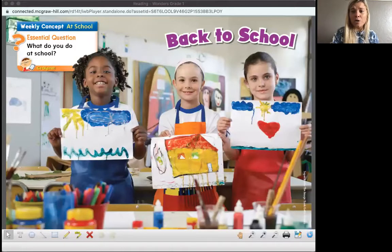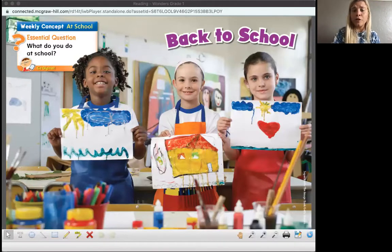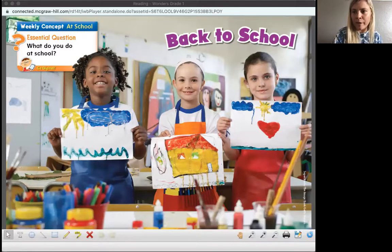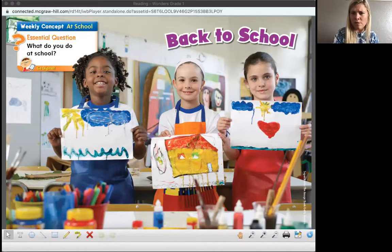First grade, our essential question that we are going to see all throughout this unit is: what do you do at your school? We have this picture here showing us three friends, and these friends are doing something. What are they doing at their school? Yeah, they are in our class and they're painting and they're drawing. That's something they can do at school.